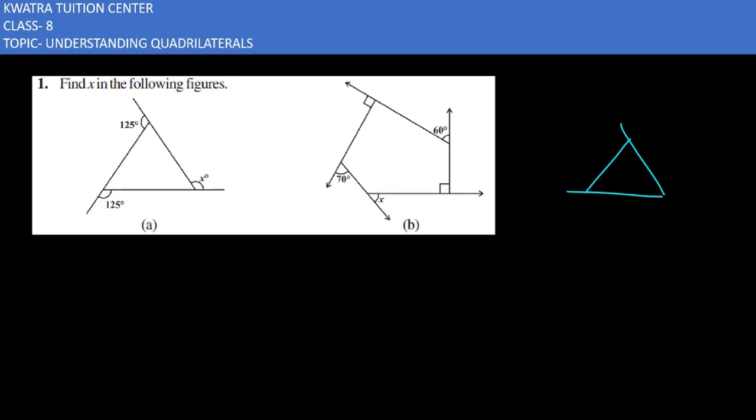There is any angle in the exterior of the polygon. Let's say this is angle 1, this is angle 2, this is angle 3. The sum of these three will be 360 degrees, whether it will be any polygon - whether it's a triangle, square, pentagon, or hexagon. Whatever the angles will be, the sum will be 360 degrees.